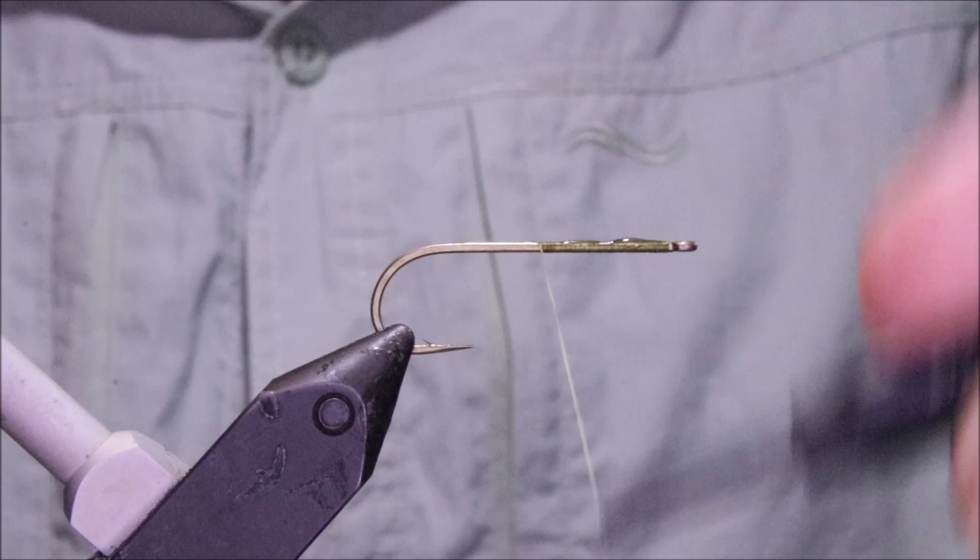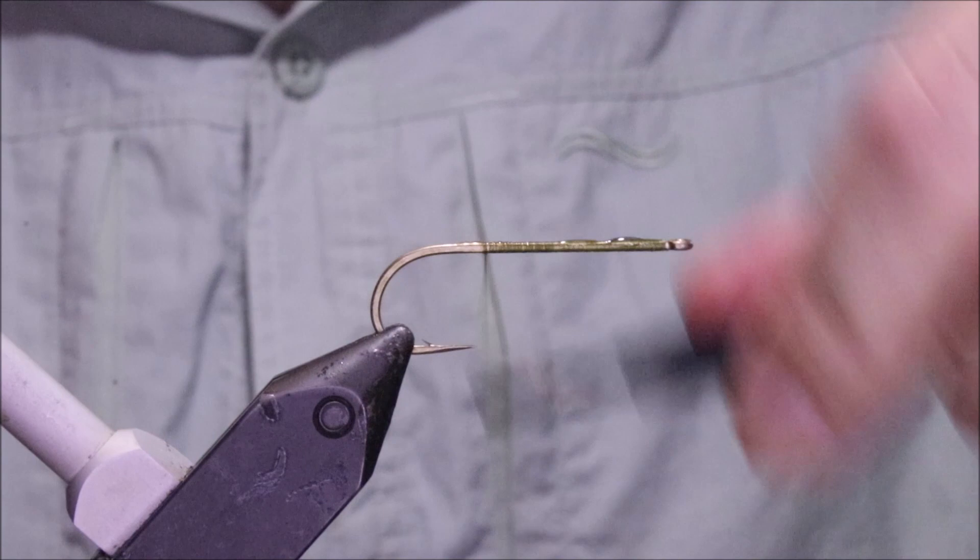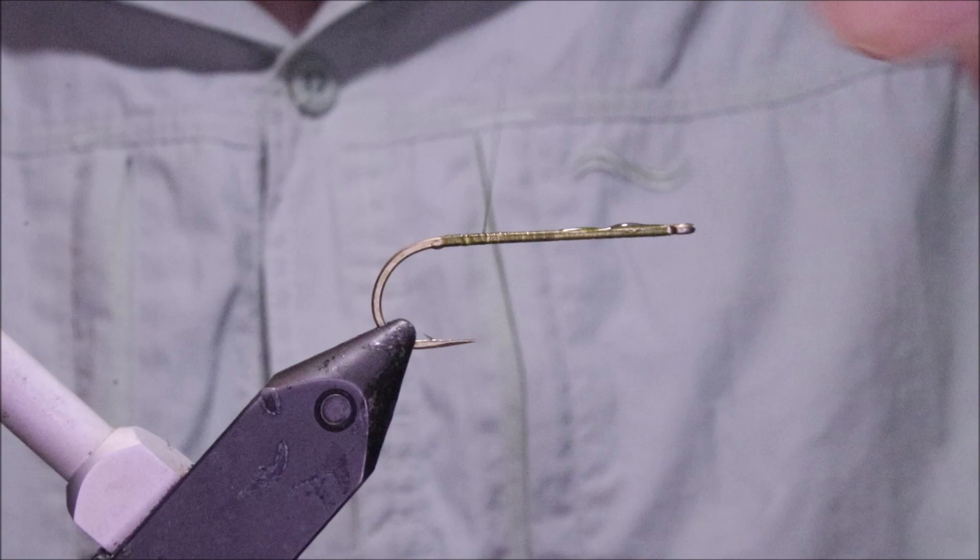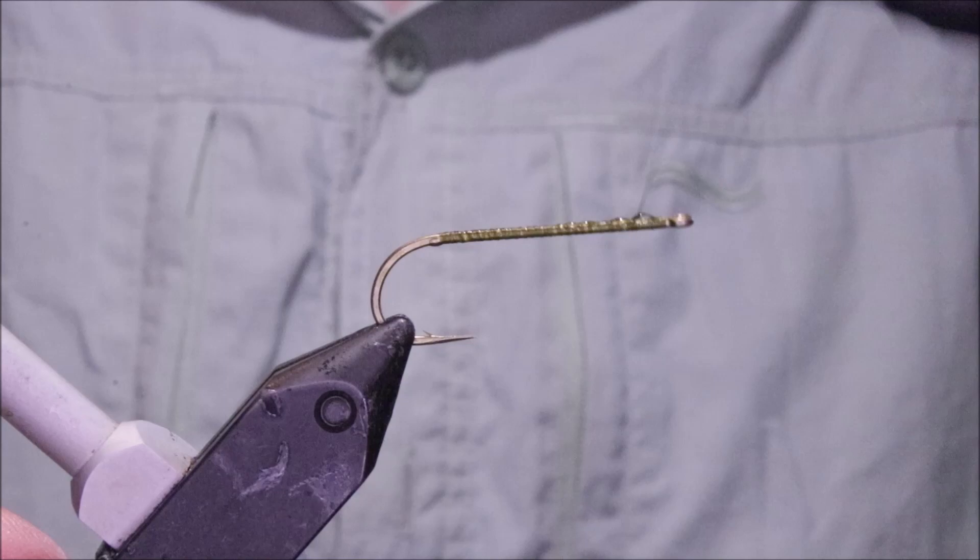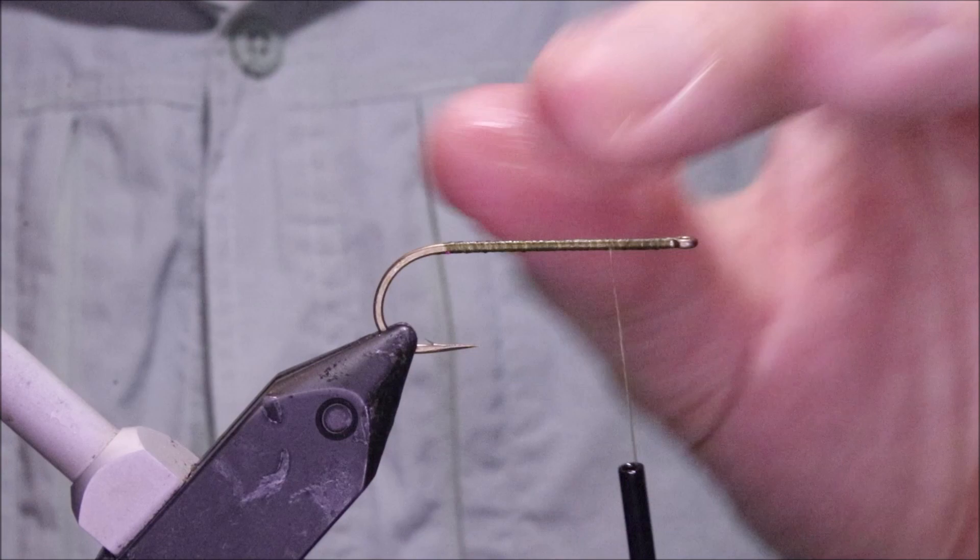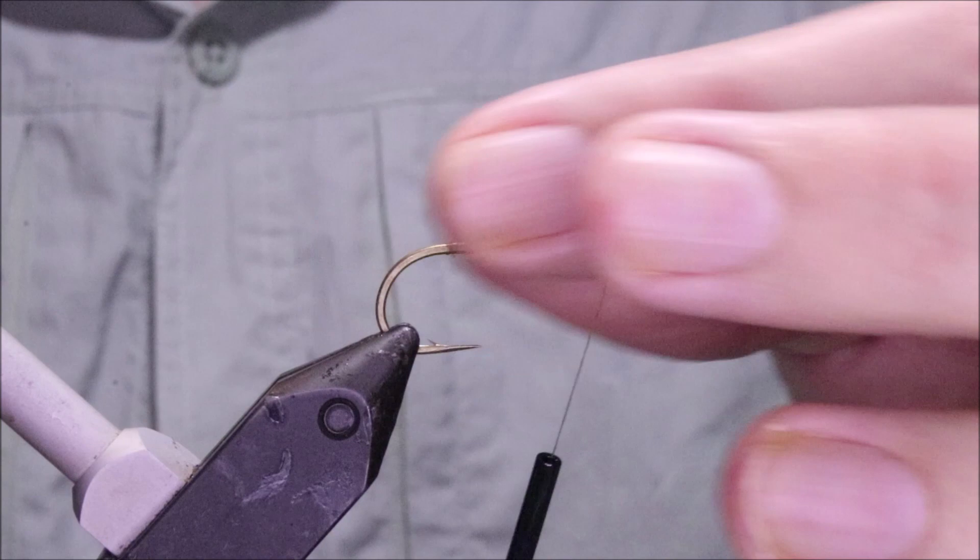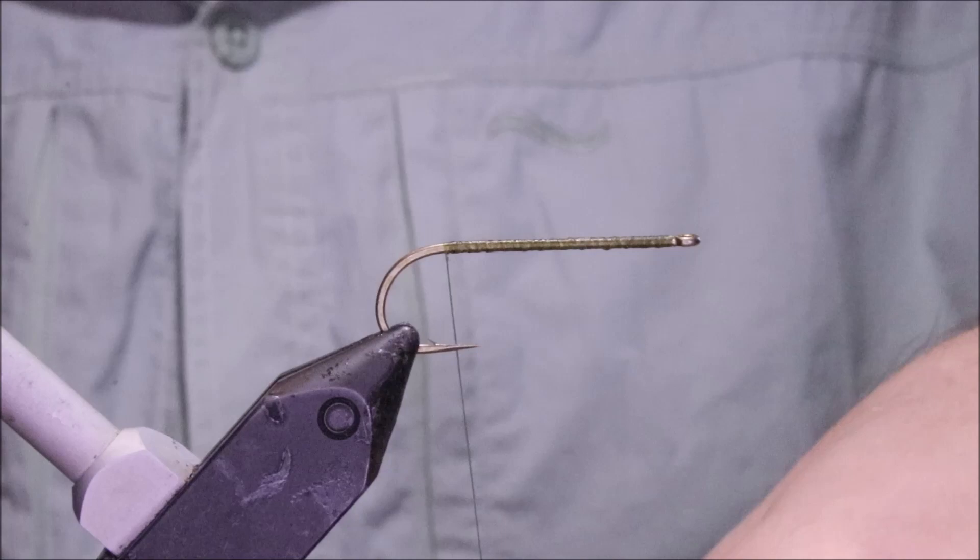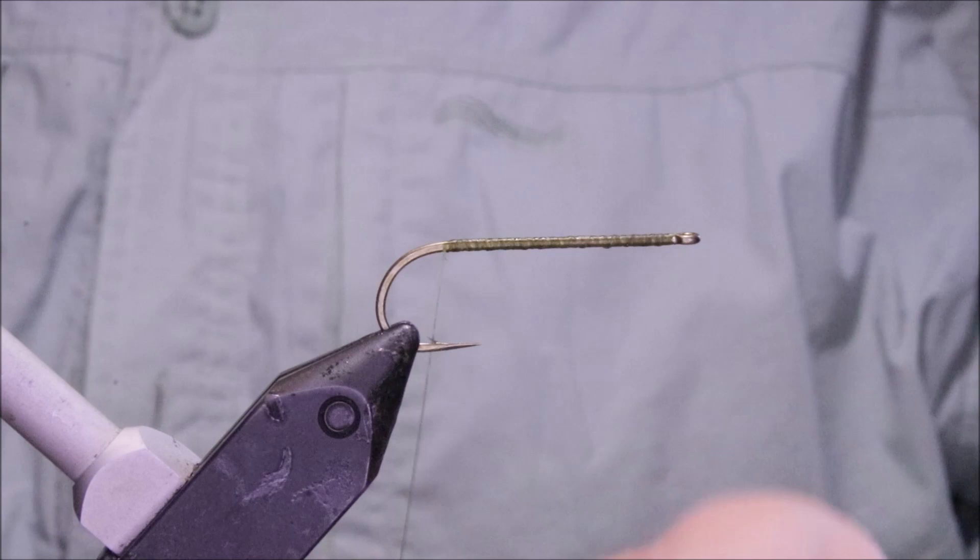Right, so I've got my hook in my vise. This is a Varivast 2500V SE, straight eye version, size 4. It's a 2x long streamer hook I'm using, so it's fairly stout, which helps the fly to land the correct way. I'm using a 2x long rather than a 3 or 4x long as some people do, because I've got more gape. I can use a size 4 rather than using like a size 6 or 8, so I've got the gape of the 4, which gives you better hookups, which is the whole point, right?